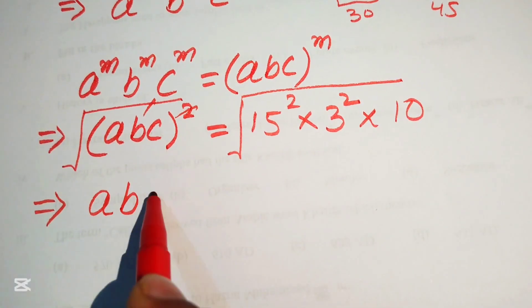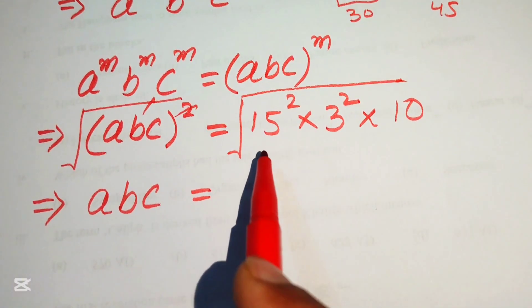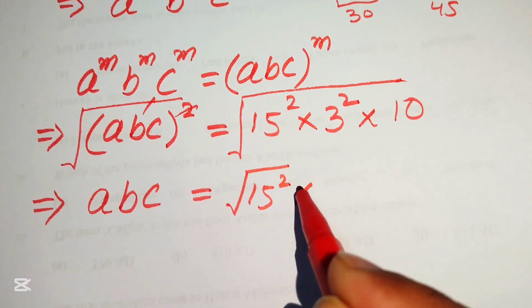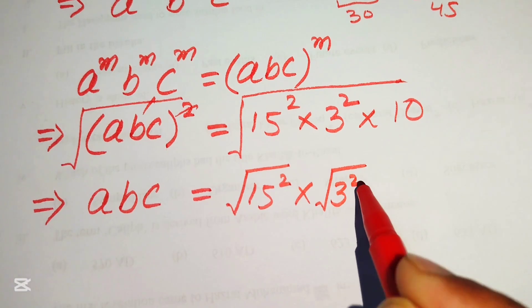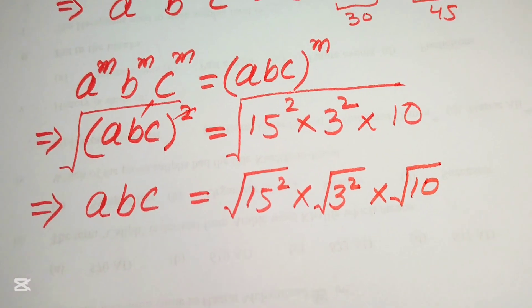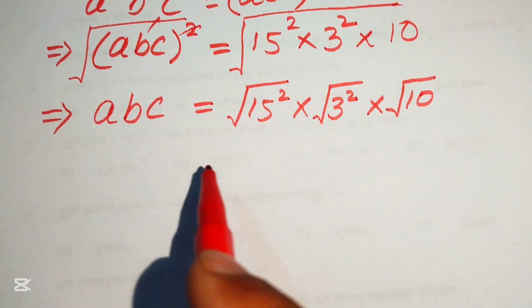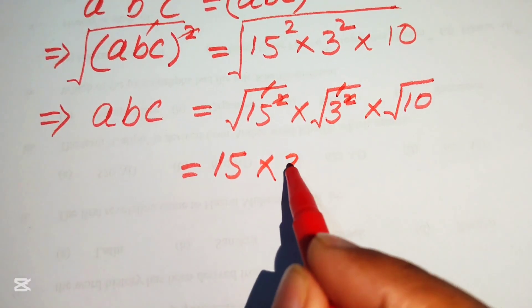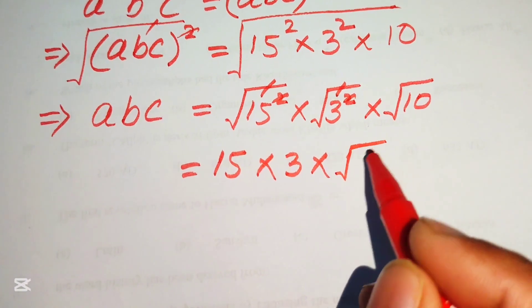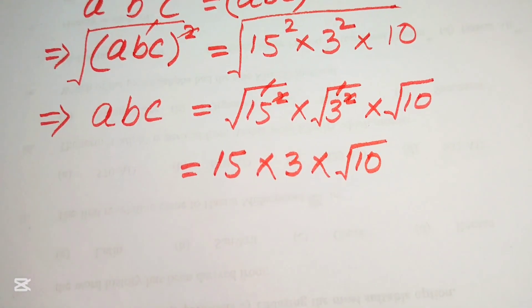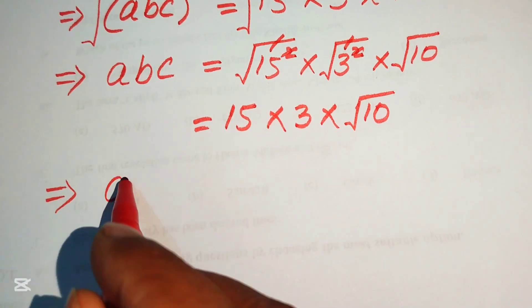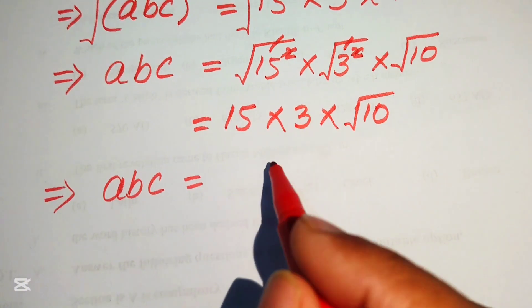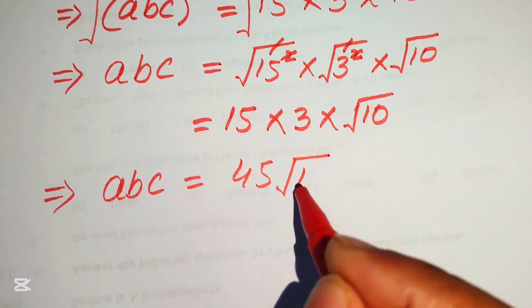Taking the square root of the right hand side separately: √(15²) = 15, √(3²) = 3, and √10 remains as √10. So abc = 15 × 3 × √10 = 45√10.